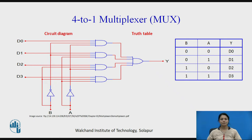The combination of A and B selects inputs one by one. When B=0 and A=0, it selects D0. When B=0 and A=1, it selects D1. When B=1 and A=0, D2 is selected for output. And when B=1 and A=1, D3 is selected as output.